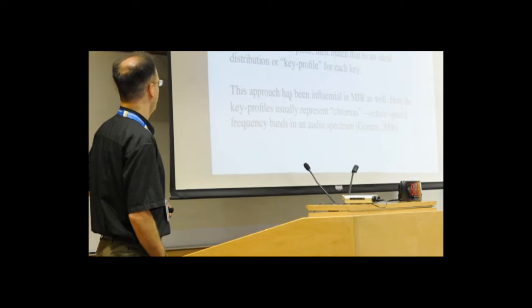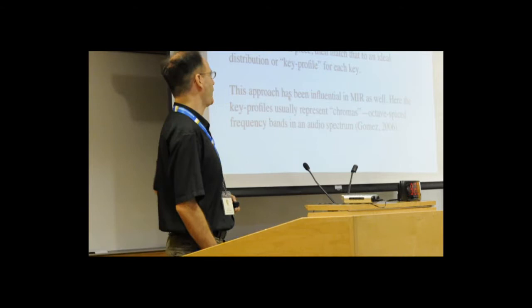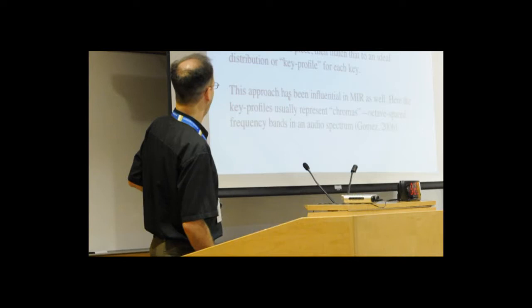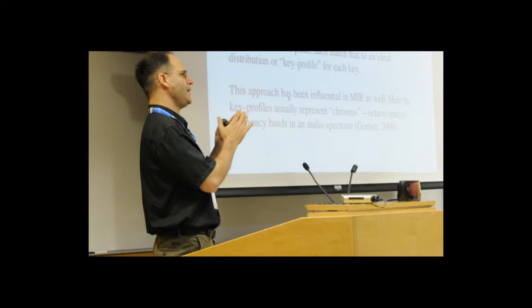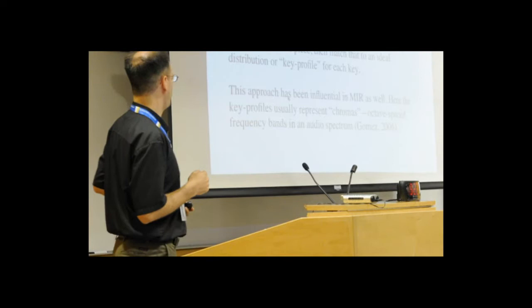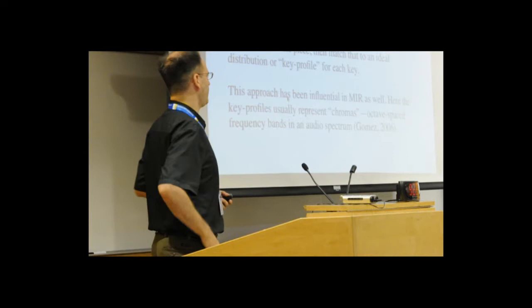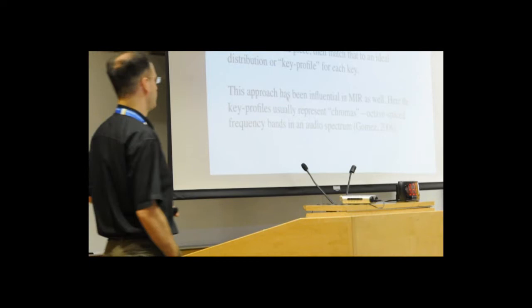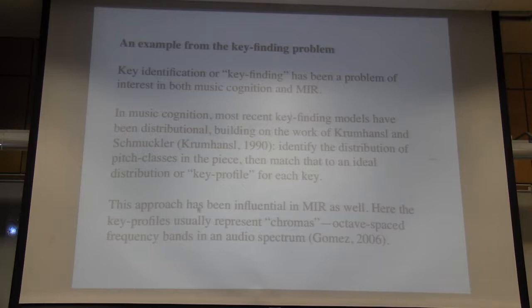A caveat: finding a good computational solution to a problem does not prove that humans solve the problem in the same way. But it at least gives you a hypothesis for how they might solve it, which you can then examine with experiments. I'm going to give an example from key finding, or key identification, which has been a problem of interest in both music cognition and MIR. In music cognition, most recent key finding models have been distributional — most famously the Krumhansl-Schmuckler model, where you identify the distribution of pitch classes in a piece and find the key whose profile best matches that distribution.